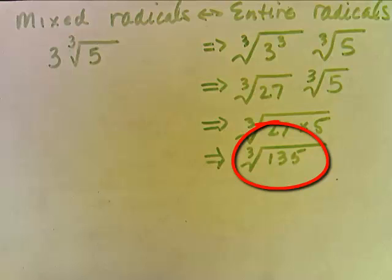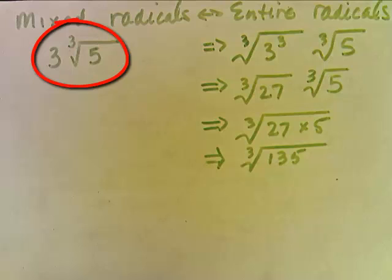If you worked backwards and simplified the cube root of 135, you would get 3 times the cube root of 5.